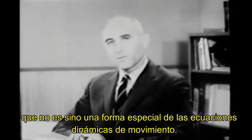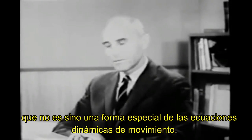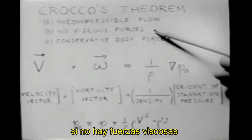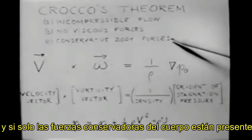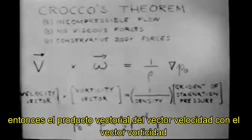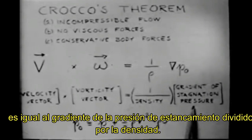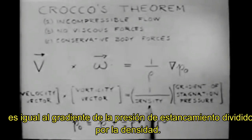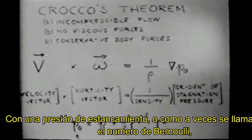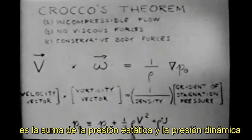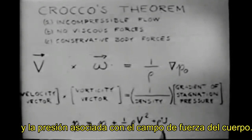There are several theorems which relate the vorticity to the dynamics of fluid flow. One of these is Crocco's theorem, which is nothing but a special form of the dynamical equations of motion. With steady motion, if the flow is incompressible, if there are no viscous forces, and if only conservative body forces are present, then the vector product of the velocity vector with the vorticity vector is equal to the gradient of the stagnation pressure divided by the density. The stagnation pressure — or as it is sometimes called, the Bernoulli number — is the sum of the static pressure, the dynamic pressure, and the pressure associated with a body force field.